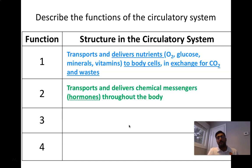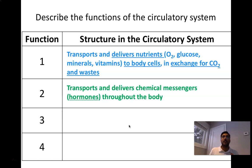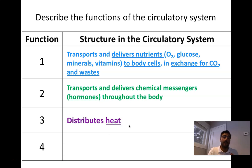The second function of the circulatory system is the transport and delivery of chemical messengers — hormones — throughout the body. This is related to your endocrine system. When you transport and deliver chemical messengers, you're moving hormones throughout the body, and you have to do that through your blood.